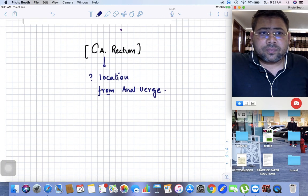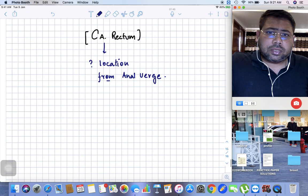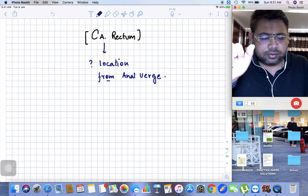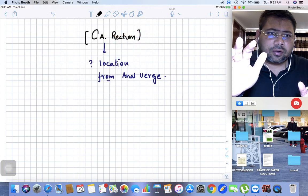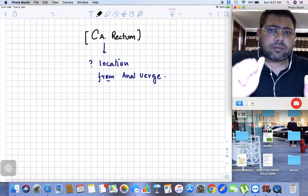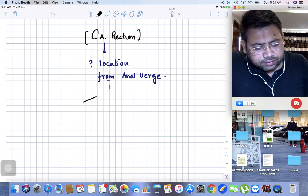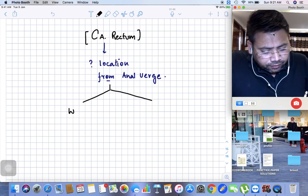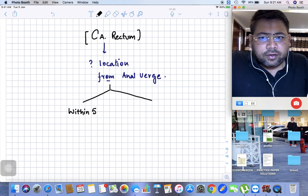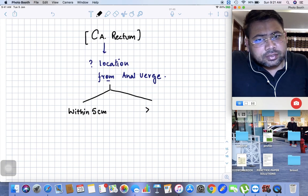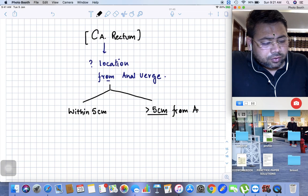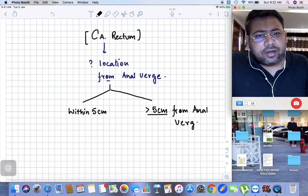Why is the anal verge important? Because the only management is surgery, but will we be able to save the sphincter or not? That is important. We need to see how far or how proximal it is to the sphincter complex. There could be two possible answers: within five centimeters or more than five centimeters from the anal verge.